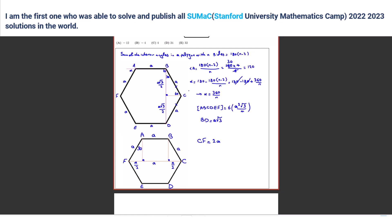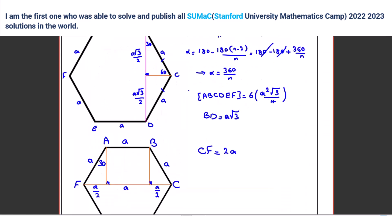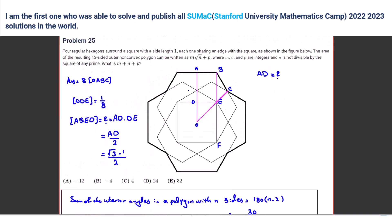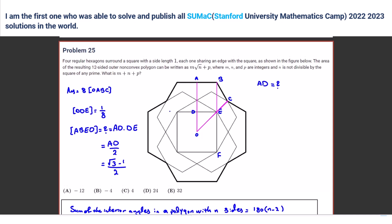Now we know all these properties of a regular hexagon. After this problem we'll work on properties of the regular octagon. We found this one and this one — only this part is left. For calculating this area, try on your own: can you find the area of triangle BCE? If you find it, then you can solve the problem.